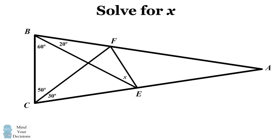By way of history, this problem is known as Langley's adventitious angles. It's also known as the world's hardest easy geometry problem because it can be solved by elementary methods, but it is notoriously difficult to do so. Can you figure it out? Give this problem a try, and when you're ready, keep watching the video for the solution.